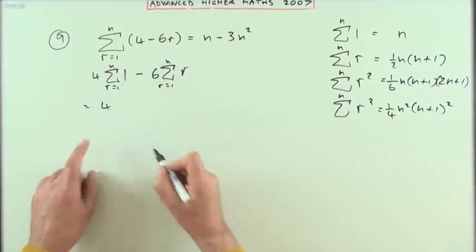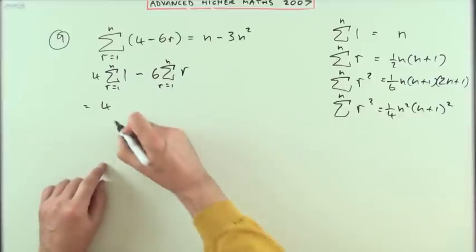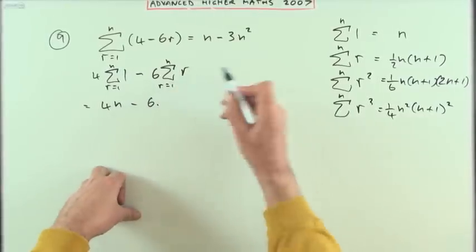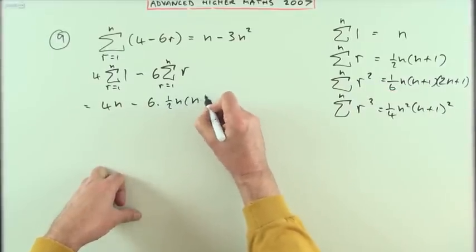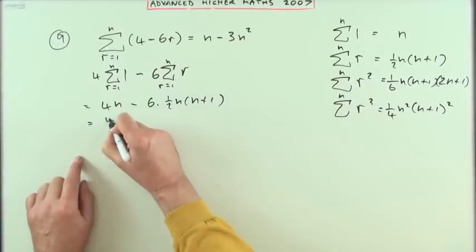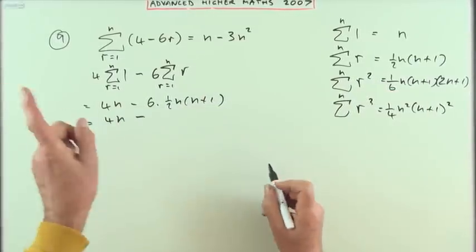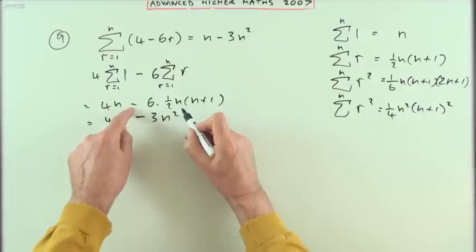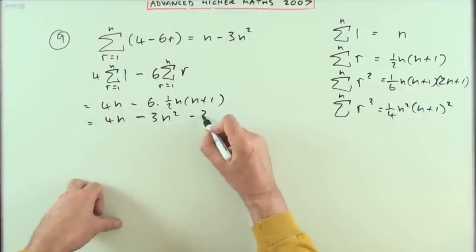So what's that? Adding a lot of ones gives you n. Six times adding the counting numbers gives you a half n times n plus one. Tidying that up, I've got 4n minus that's 3n times n is 3n squared, minus 3n times 1 is 3n.